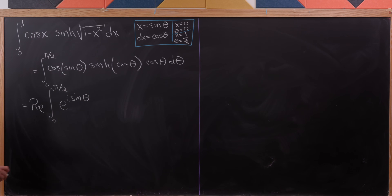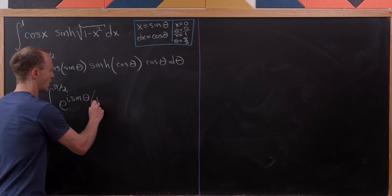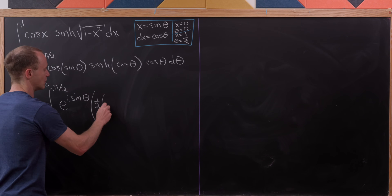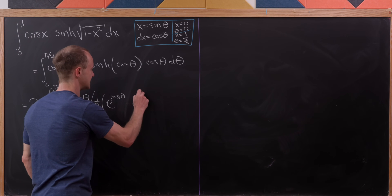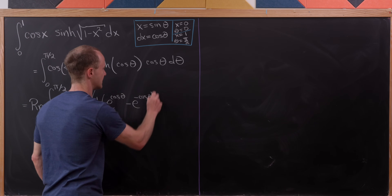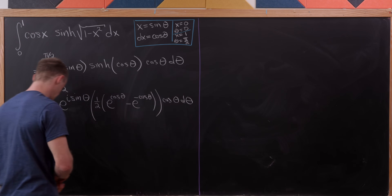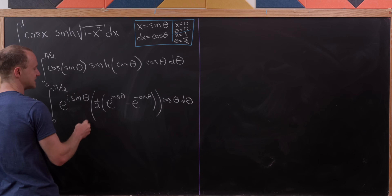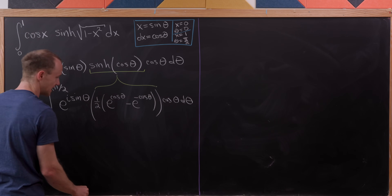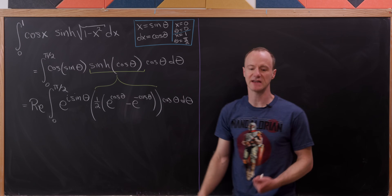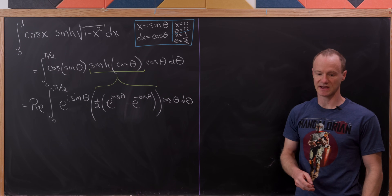This gives us one half times e to the cosine theta minus e to the minus cosine theta, times cosine theta d theta — using the definition of the hyperbolic sine function in exponential form.